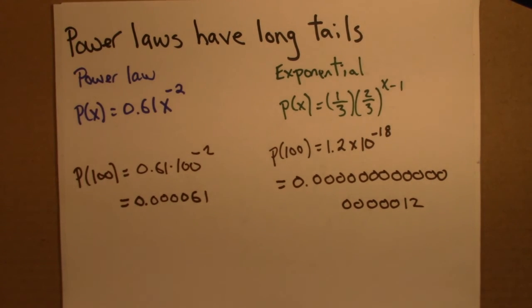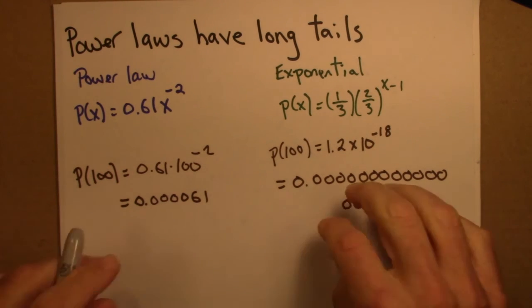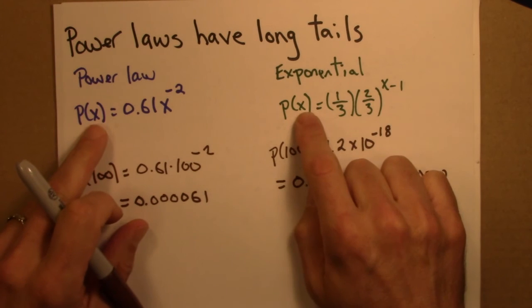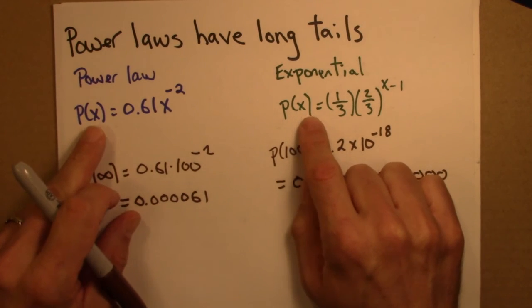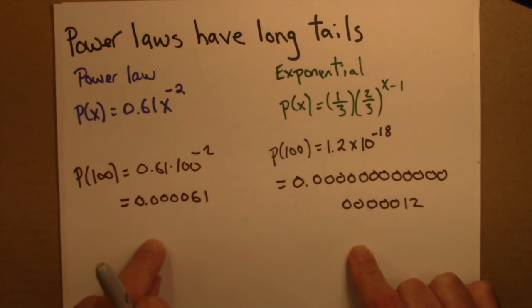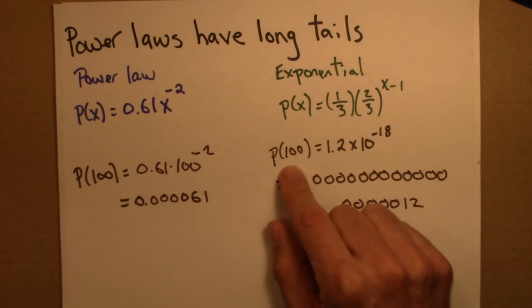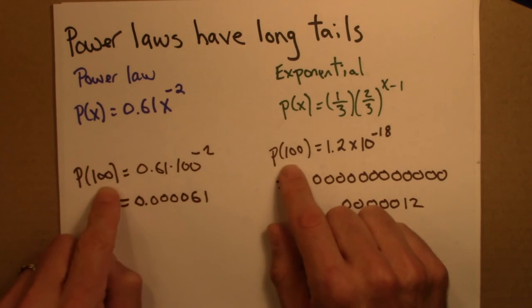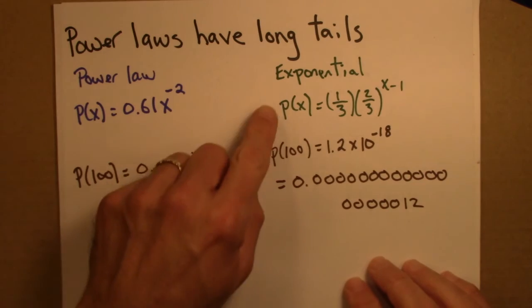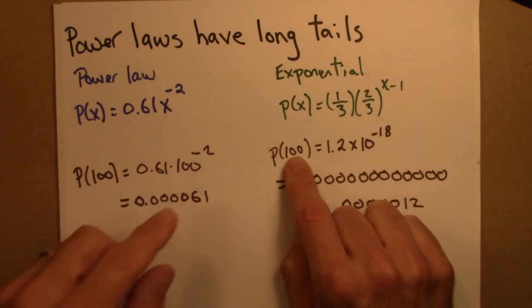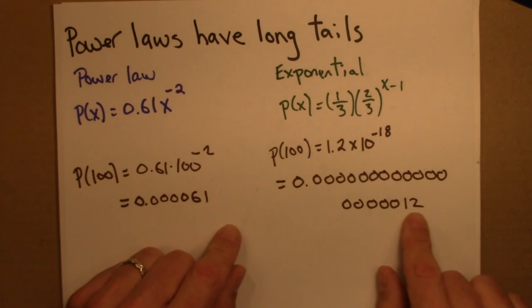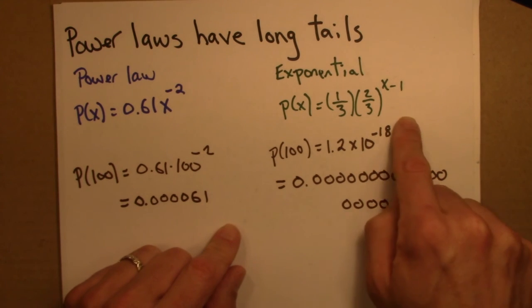So power laws and exponentials both are decaying functions. Large values of x get less and less likely as x gets larger. But the power law decays much less slowly. Its tail is longer. It's thicker compared to the exponential. And easy to imagine that this might have some implications. Let's say this is the probability of a dangerous storm or a financial crash or something. Some event that's unlikely. Well, if it's distributed according to an exponential, maybe P(100) is some particularly terrible thing. This is something that you're never going to see. This is indistinguishable from 0.